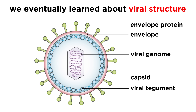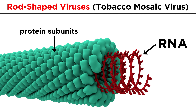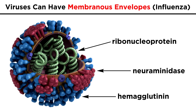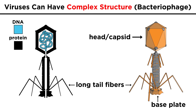Later, as we became able to examine viruses with more sophisticated techniques, we began to realize the structure of the virus, which comes in a number of forms. Some are rod-shaped or helical, like the tobacco mosaic virus. Some are icosahedral, like an adenovirus. Some have a membranous envelope covered with spikes, like the influenza virus. And some even look like weird little spiders — this is called a bacteriophage, and it's kind of like a rod-shaped and icosahedral virus combined, with some fiber tails.